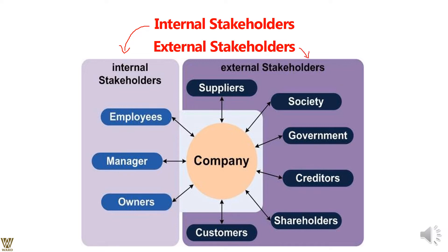Internal stakeholders are employees, managers, and owners — they have direct responsibilities. Owners earn profits, managers receive bonuses, incentives, and salaries, and employees receive similar benefits. External stakeholders are suppliers, vendors, the society in which the organization operates, the government which collects taxes, creditors who deploy money and earn interest, shareholders who invest, and customers — because without customers, the business ceases to exist.